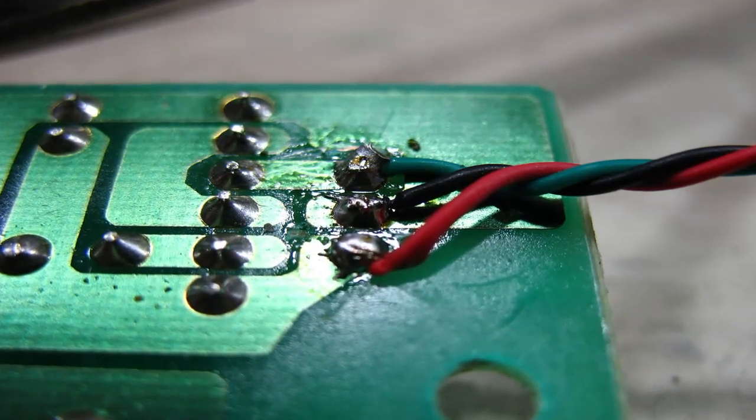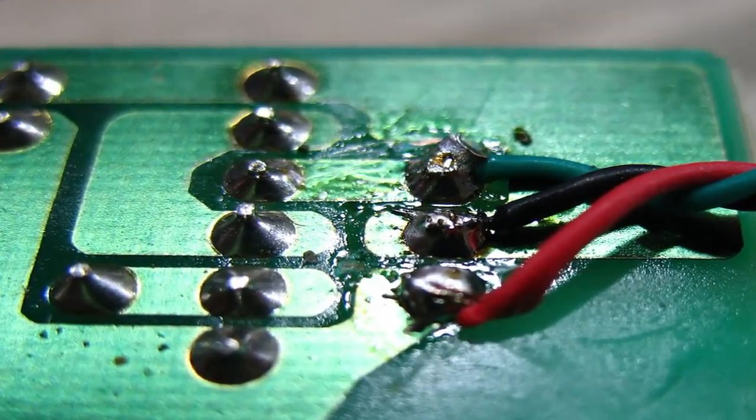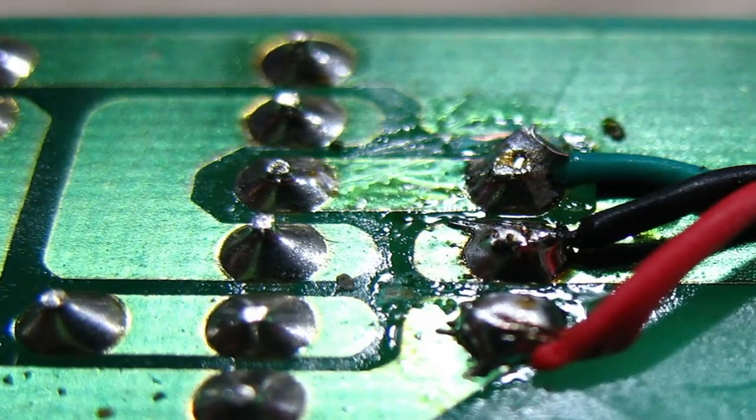A short circuit can occur due to a fault in the wiring or components of a circuit, or due to accidental contact between conductors.